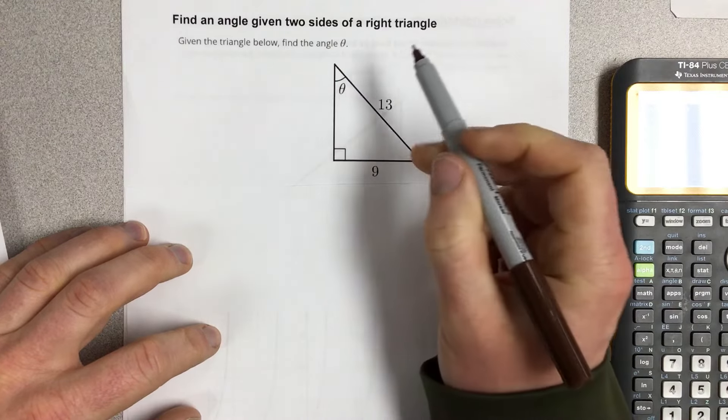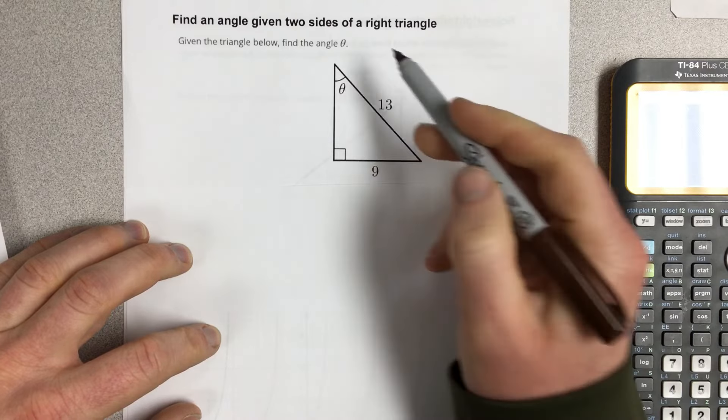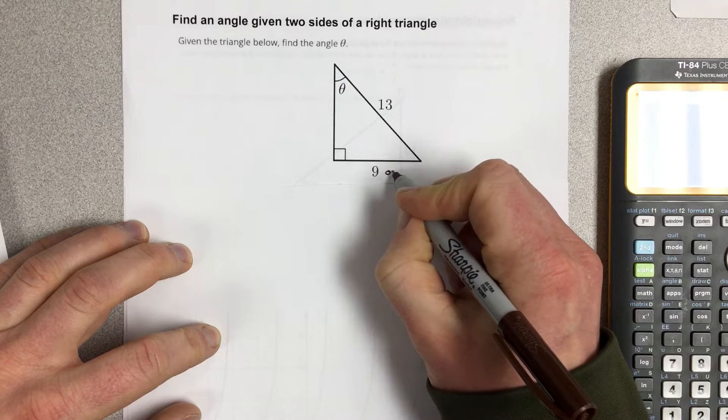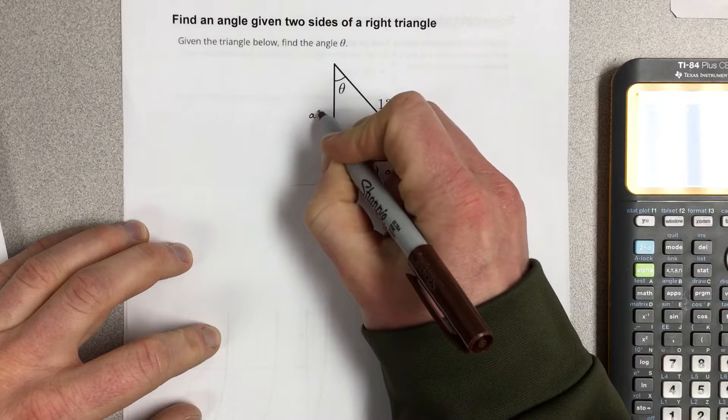So I'm going to find theta, and theta is up in the upper left-hand corner, which makes the 9 the opposite side, and the 13 the hypotenuse. This would be the adjacent side.